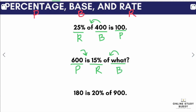Lastly, we have: 180 is 20% of 900. So 180 is associated with the word 'is', therefore it is the percentage P. 20% is our rate R. And 900, since it is associated with the word 'of', it is the base B.